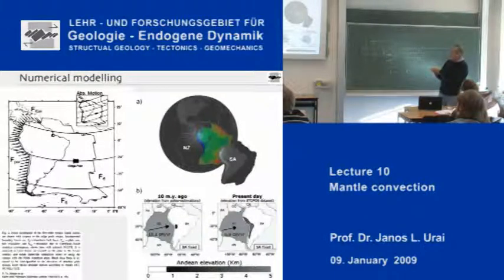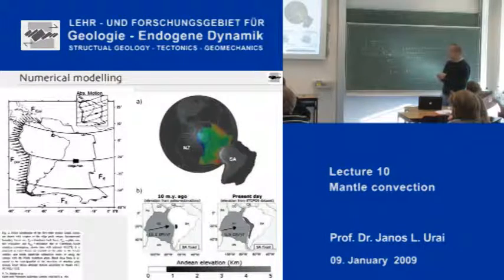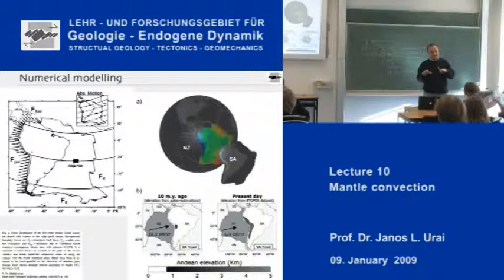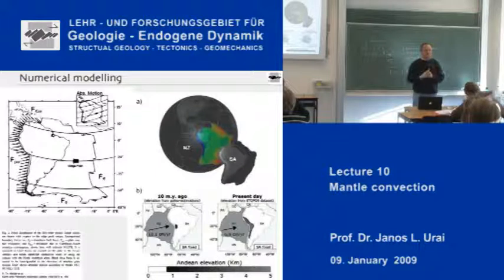The South American plate is bound by the mid-oceanic ridge on the east side, and on the west side there is the subduction zone. Part of it is a continent and part of it is ocean. Here is a colorful picture showing the same thing, and from geological studies we also know that the Pacific plate was moving at a different velocity with respect to the South American plate about 10 million years ago. We can figure that out because we know the age structure of the Pacific plate and can put it back 10 million years.